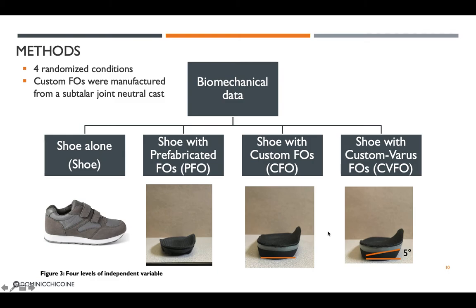We used four randomized conditions: the shoe alone, the shoe with prefabricated foot orthoses, the shoe with custom foot orthoses, and the shoe with custom varus foot orthoses. The custom orthoses were manufactured from a subtalar joint neutral cast with the participant prone, maintaining a neutral relation from rear foot to forefoot. A minimal fill cast was performed for both custom orthoses. The custom varus condition added a 5-degree medial wedge and a 4-millimeter medial skive. These specifications were constant for all participants.